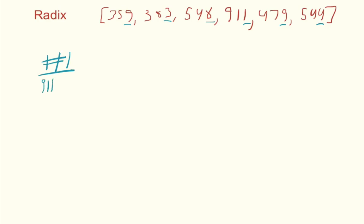911 is our first, then 383 is the second, followed by 544, followed by 548, followed by 359, followed by 479. That's all our digits. Now if you look down that first column, you'll see that it is sorted—the first column digits are sorted. So that's good.